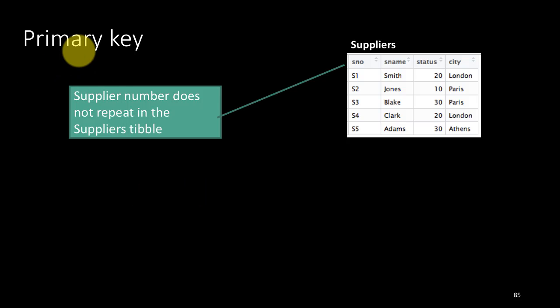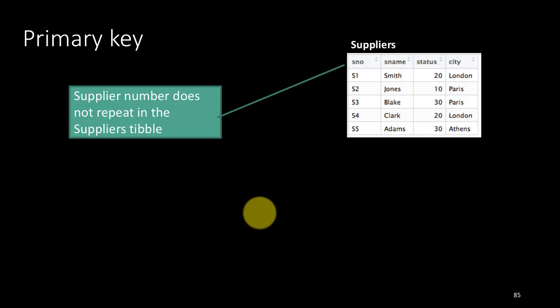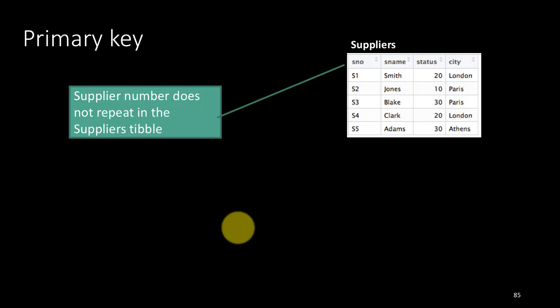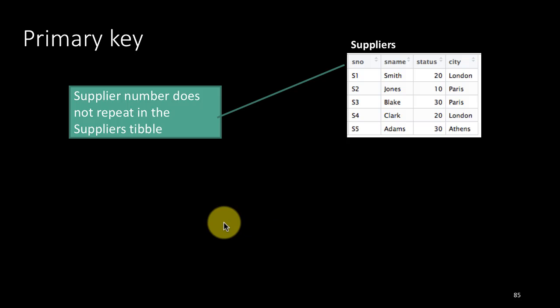The value of the primary key for a particular column in a table uniquely identifies a row of the table. Of course it's not necessary that every table have something that uniquely identifies a row, but it's a good idea to have such a column within a table.